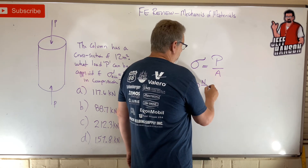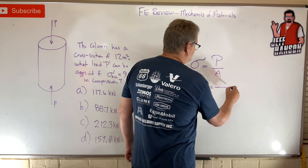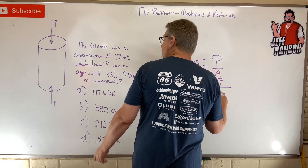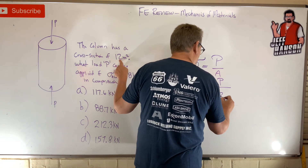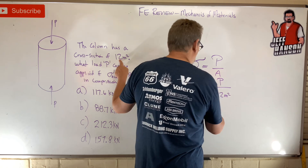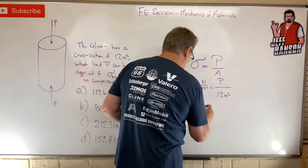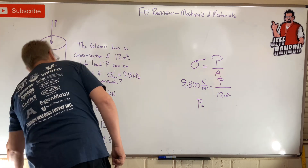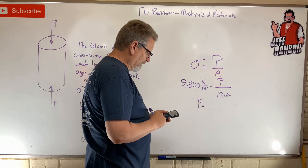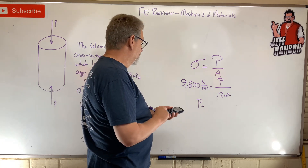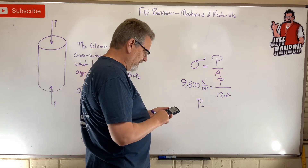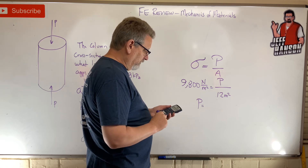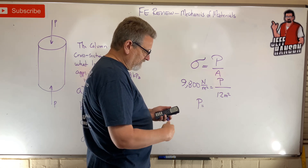So if I have P in newtons and area in meters squared, the meter squares cancel out and give me P in newtons. All I have to do is multiply: 9,800 times 12 equals 117,600 — that's 117.6 kilonewtons.